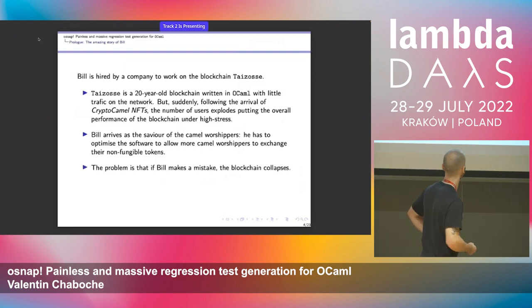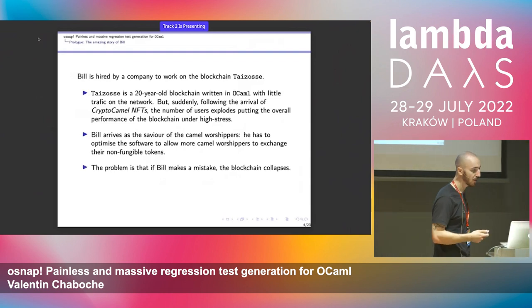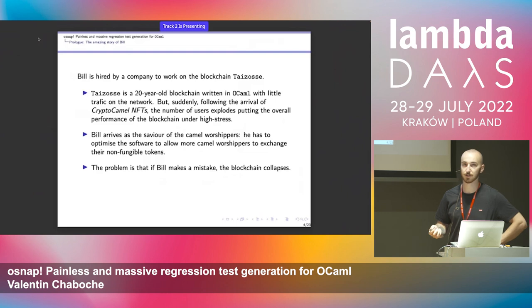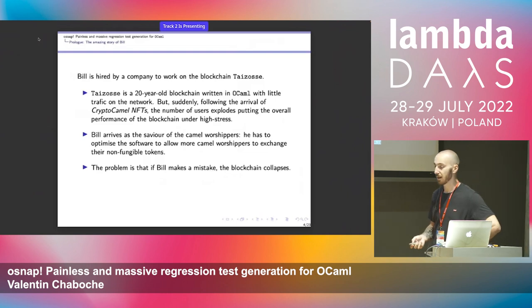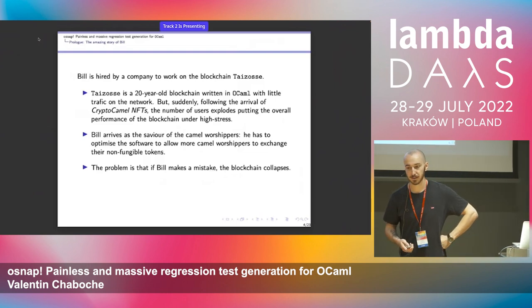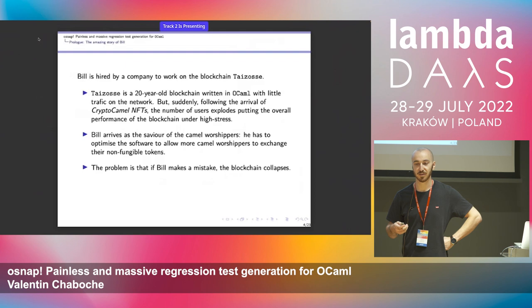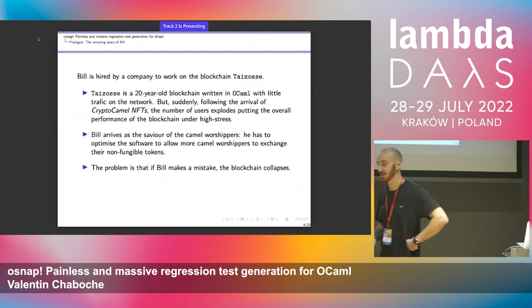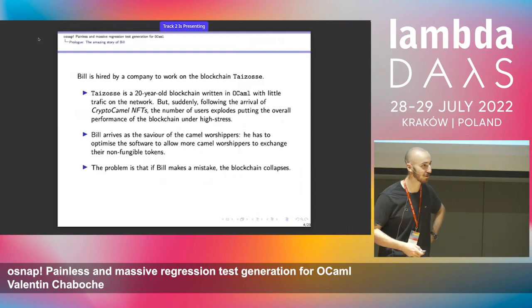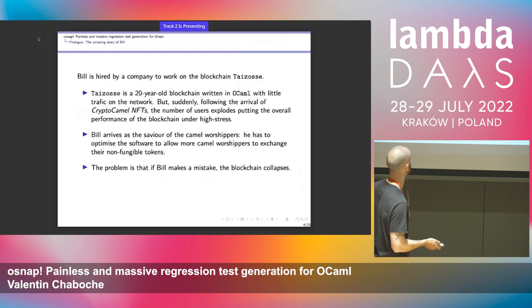The problem is, if Bill makes mistakes, the blockchain can collapse. Being critical software with a lot of virtual money on it, we don't want people to lose their virtual money — it would be a real disaster and something we want to avoid.